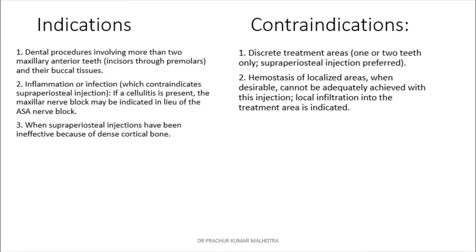Indications include extraction or procedures involving more than two maxillary anteriors — that is, incisors through premolars — and the buccal tissue adjacent to these teeth. It is also indicated in cases where infection, inflammation, or cellulitis is present in that area, since supraperiosteal injections are contraindicated in such situations.